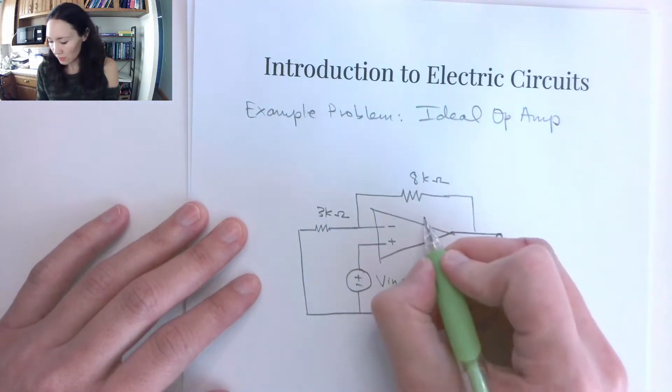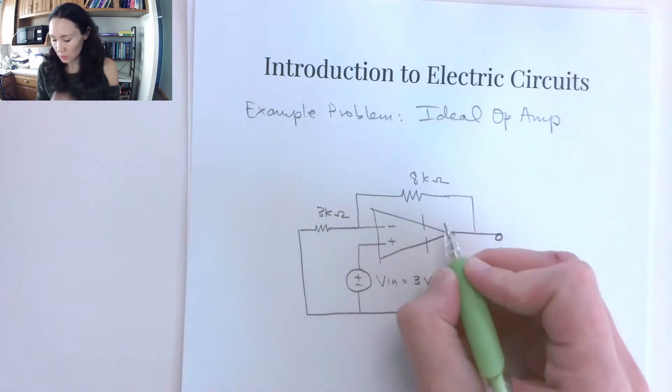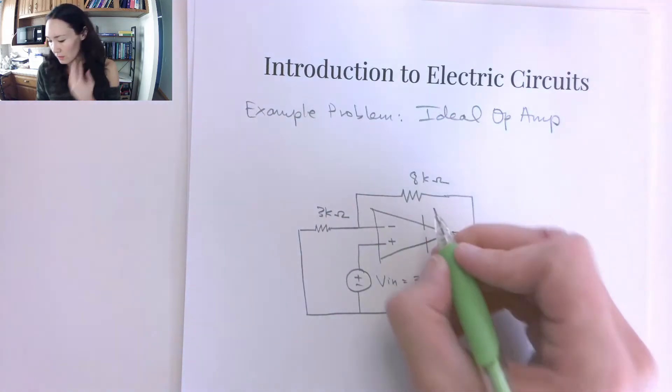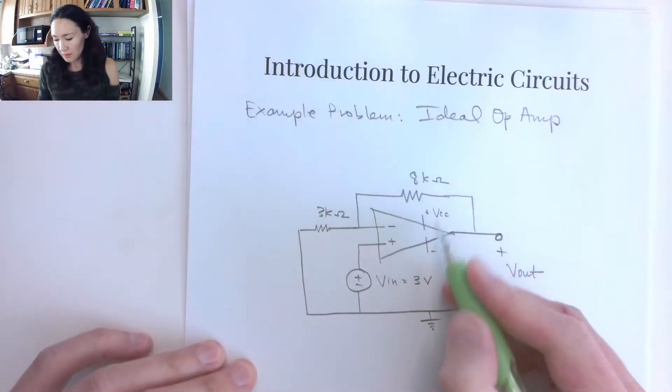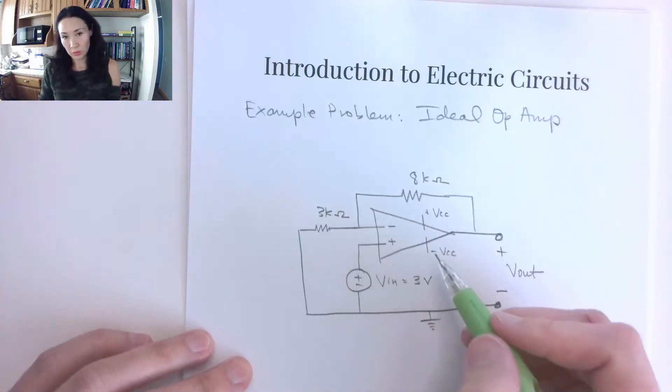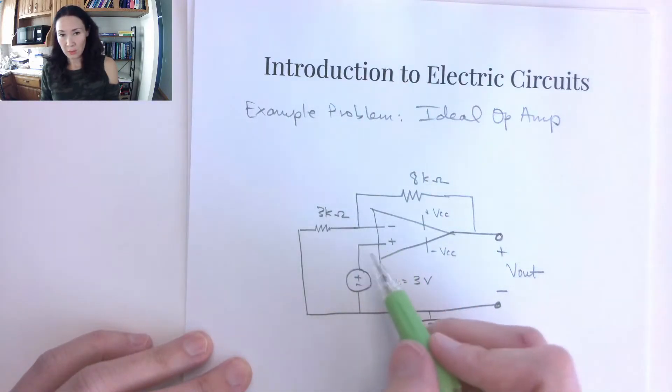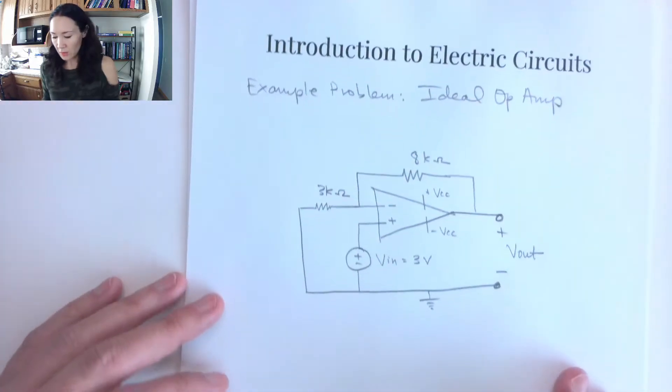So remember, in our schematics, it's not always drawn the values for VCC and minus VCC, because these are just the power inputs that turn the op-amp on. It's not actually a signal that gets multiplied. That signal that gets multiplied and amplified is coming in here at these inputs.